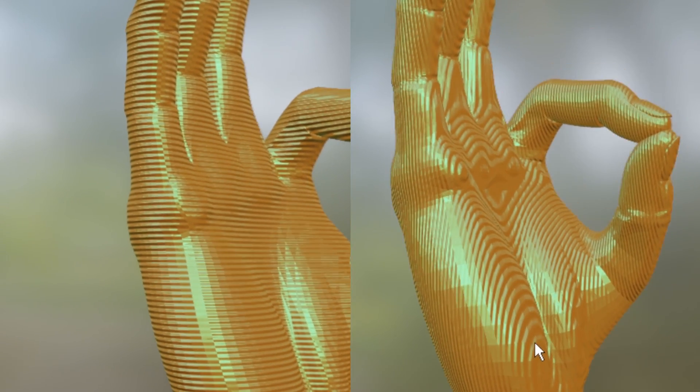Now when you print on an angle, the layer lines shift from horizontal or vertical to diagonal. The weakest part of a 3D model are the layer lines. Oriented horizontally they're pretty weak. Oriented vertically they're pretty strong. But now that our layer lines are diagonal, we get the best of both worlds.